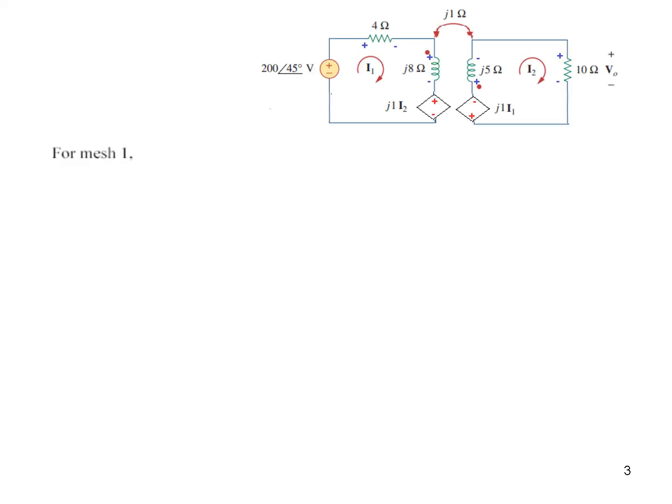Okay, so for mesh 1, we can start from any corner. I prefer to start from the left corner, so we will go like this. It will be minus 200 angle 45, then 4I1, j8I1, and plus j1I2. So this is our first equation of mesh 1, we can rearrange this. So having rearranged, this is our first equation.